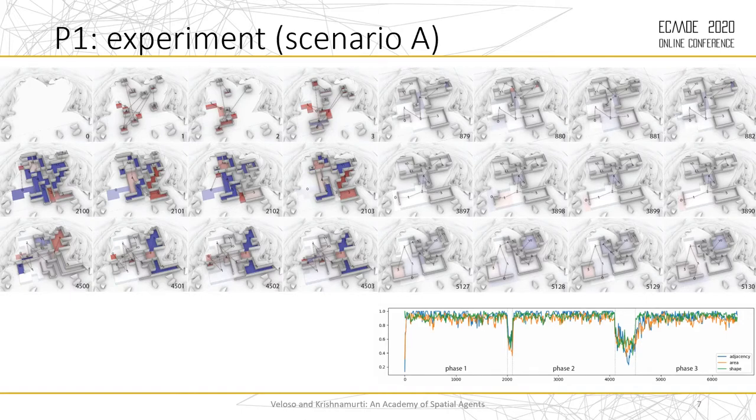You can see that in scenario A, the agents start occupying the top of the hill. These are just some time steps we selected for visualization. The agents occupy the top of the hill, and they start generating good layouts. Then they're able, after randomness, to recover, and they start generating other good layouts. You can see in the graph that the performance of the agents with respect to adjacency, area, and shape is good overall, and they're able to recover from randomness. This is the phase of randomness and the agent recovers.